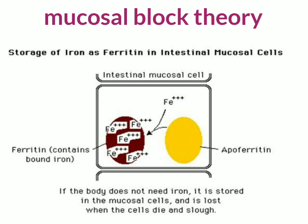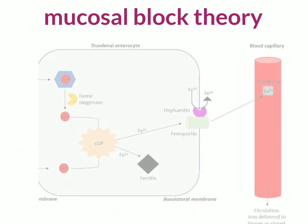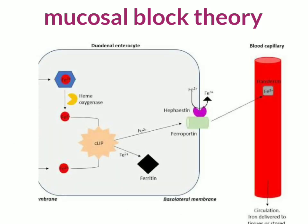When iron is needed by the body for tissues like the bone marrow for production of RBCs, these Fe3+ ions are reduced to Fe2+ ions. These Fe2+ ions then cross the mucosal cell with the help of a protein called ferroportin.